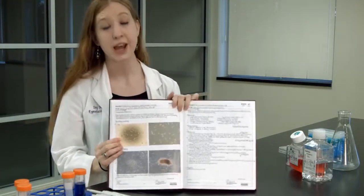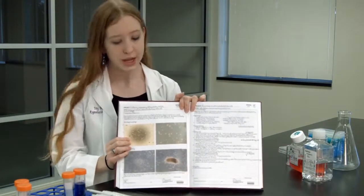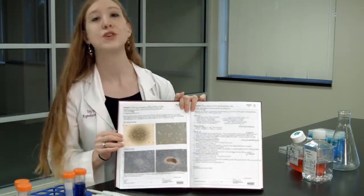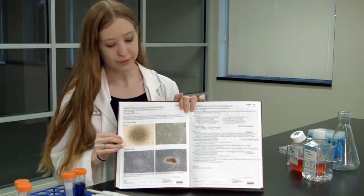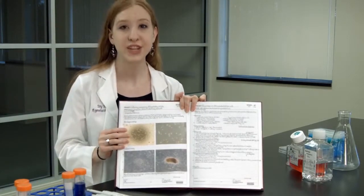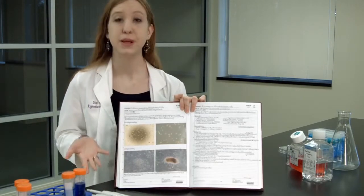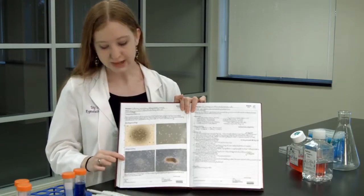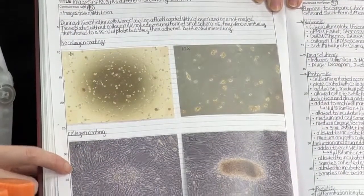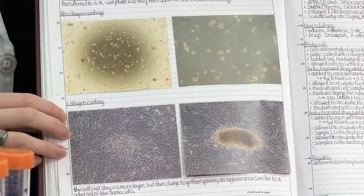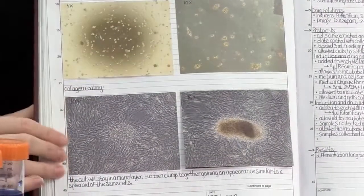It's also really helpful to have images of what you're doing or what you've done, especially if you're doing cell work. It can be really helpful if your cells change morphology or structure over time to be able to look back on that. For instance, on one day these cells were growing in a monolayer and they had a very spindle-shaped morphology.